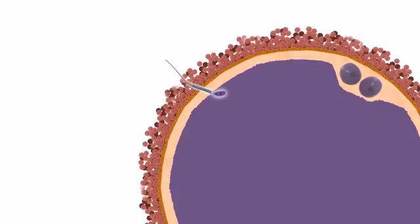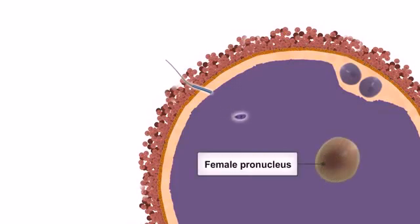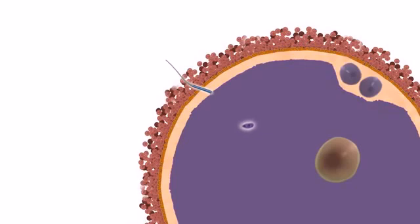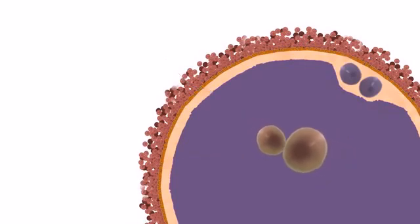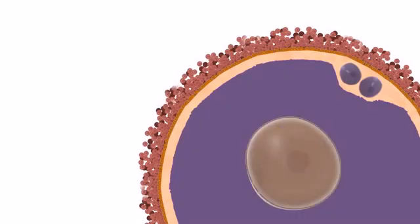Upon the spermatozoan entering, the oocyte undergoes meiosis II and further develops into the female pronucleus. During this time, the sperm develops into the male pronucleus and the two pronuclei fuse to form a single diploid nucleus, or zygote.